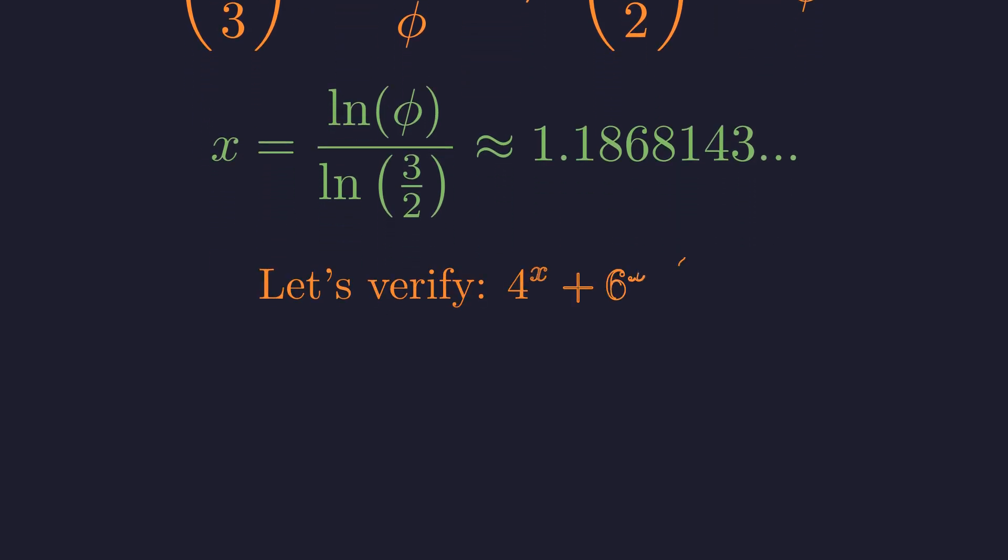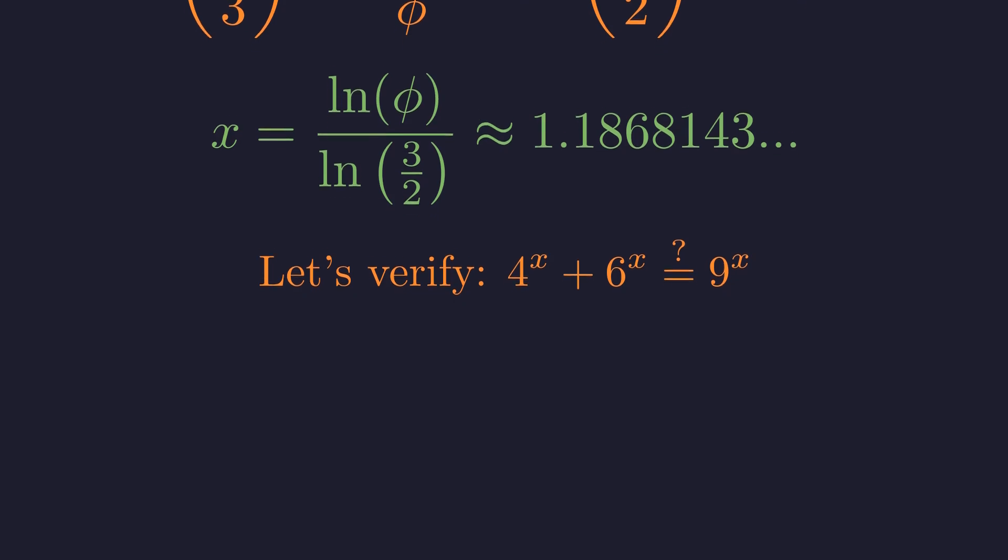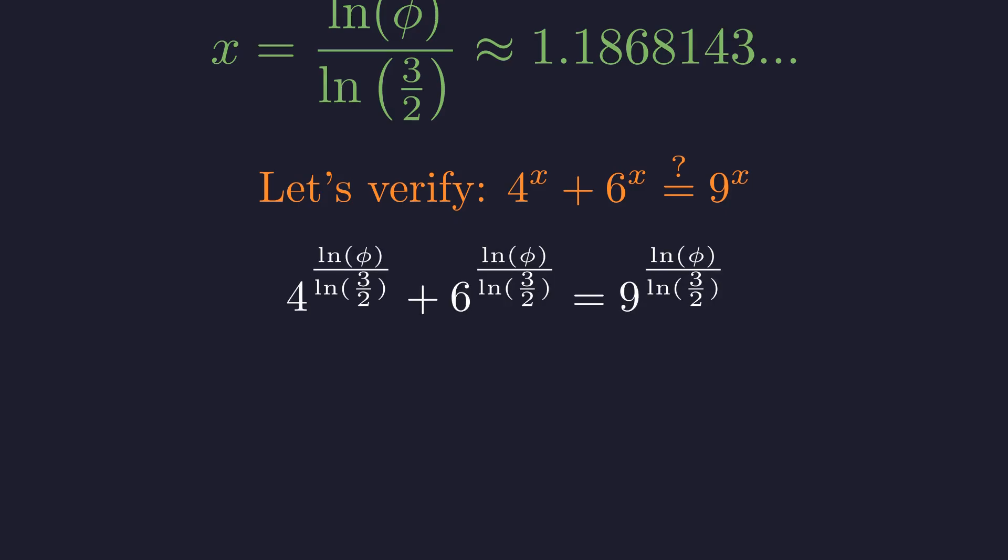As a final check, let's verify our solution by substituting our exact value of x back into the original equation. Using the exact form of our solution ensures mathematical precision in our verification. Substituting our exact expression, we can verify this equality through properties of logarithms and exponents. Numerically, both sides equal approximately 13.578 to 5 decimal places, confirming our solution is correct.